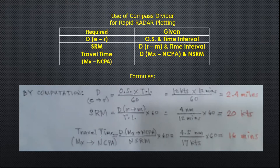To solve for your travel time from MX to NCPA, it is equal to your distance from MX to NCPA divided by the new SRM, multiplied by 60.